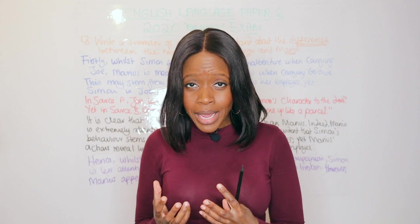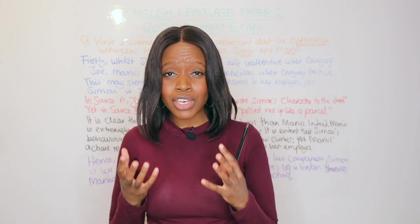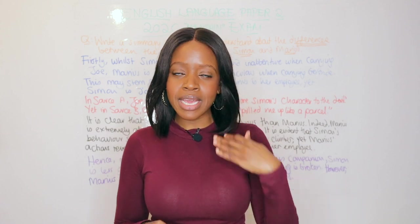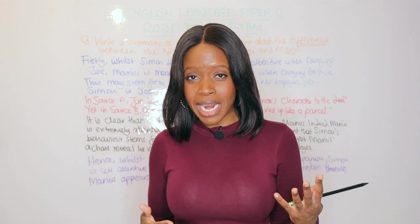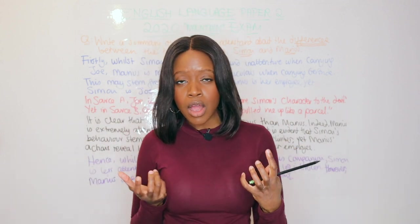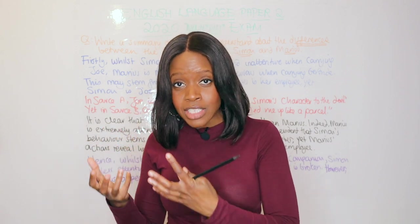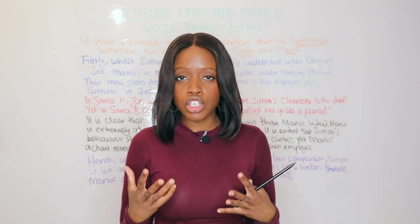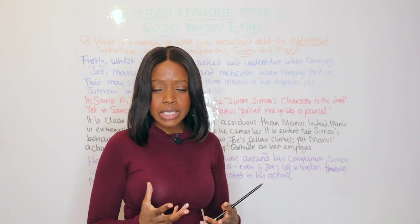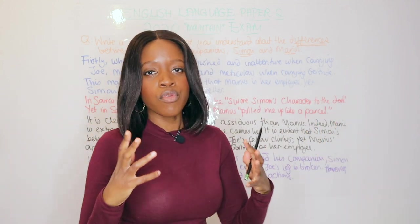When it comes to the English Language Paper 2 exam, one of the great advantages you have is knowing the structure and wording that each question will adopt. When it comes to Question 2, we should always anticipate it's going to be a comparative question where you look at Source A and Source B, writing a summary of either differences or similarities between something thematically similar in both sources. What I want to show you is how to craft a really perfect response and paragraph relating to this question.